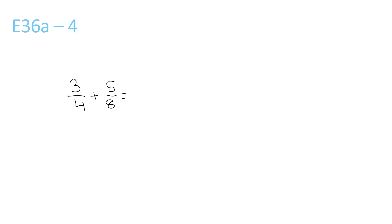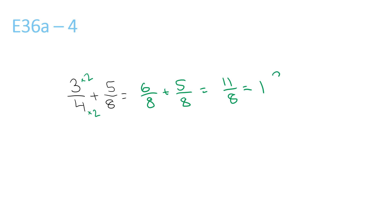This one here, LCM is 8, times the top and bottom by 2, giving 6 over 8, plus 5 over 8, gives you 11 over 8. Now 8 goes into 11 once, remainder 3 over 8, so it's 1 and 3 over 8.